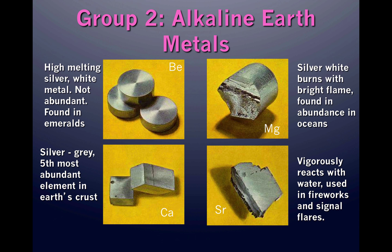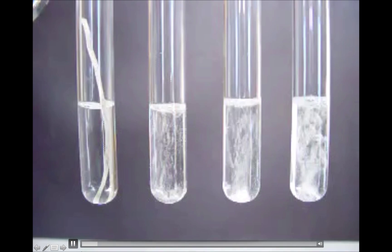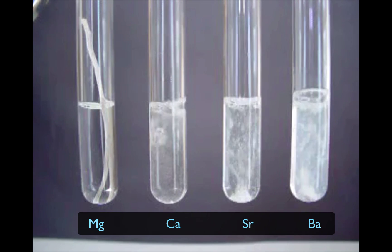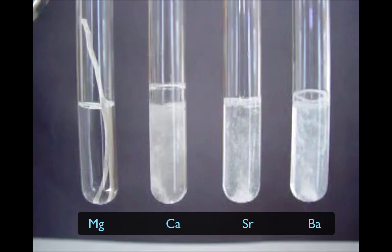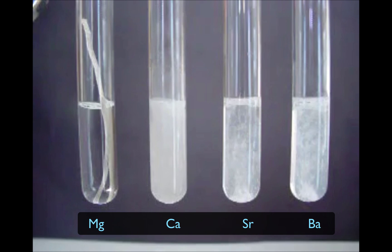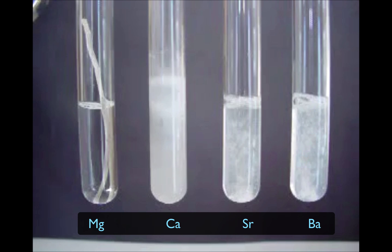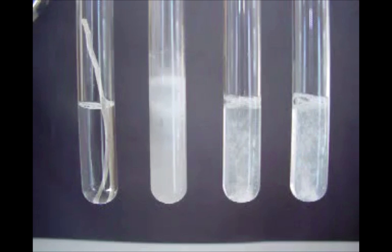The alkaline earth metals are also reactive, but not as reactive as the alkali metals. They have two valence electrons, and their outermost electrons are also filling S sublevels. Beryllium, magnesium, calcium, and strontium are all silvery, shiny metals. Notice that magnesium does not react with water, but calcium, strontium, and barium do. As you go down a family of metals, reactivity increases and the tendency to lose electrons increases.